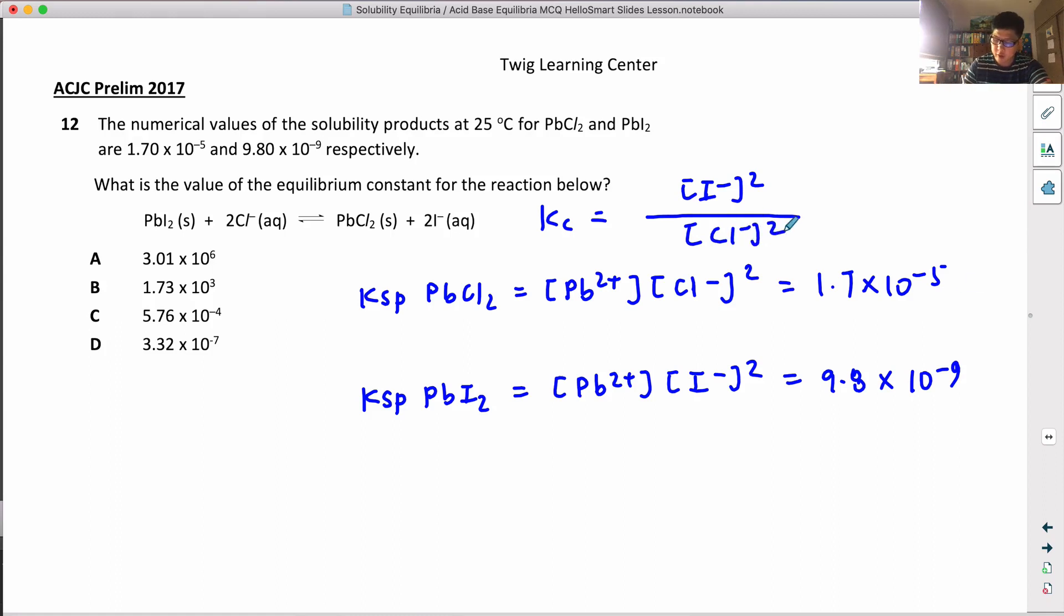So if I call this equation 1 and I call this equation 2, in order to get the Kc, it's actually equation 2 divided by equation 1. Can you see that? Equation 2 divided by equation 1.